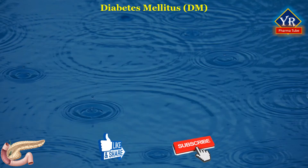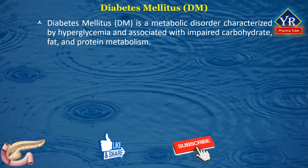The disease diabetes mellitus, abbreviated as DM, is a condition wherein the body no longer produces insulin or uses insulin efficiently. Insulin is a hormone needed to convert carbohydrates and other food into energy needed for life. Diabetes mellitus is a metabolic disorder characterized by hyperglycemia and associated with impaired carbohydrate, fat, and protein metabolism. The disease results from defects in insulin secretion or insulin action, which progressively leads to chronic microvascular, macrovascular, and neuropathic complications.